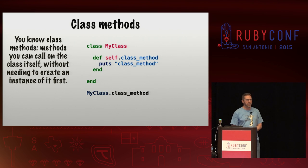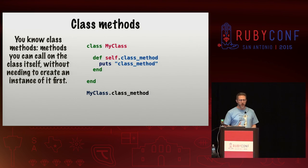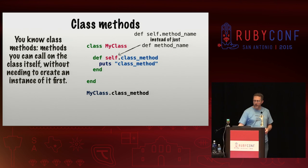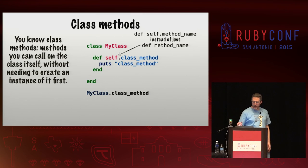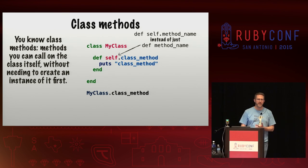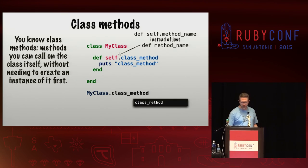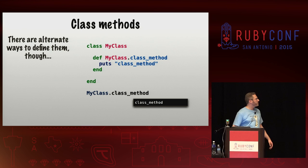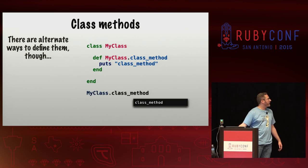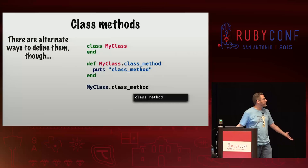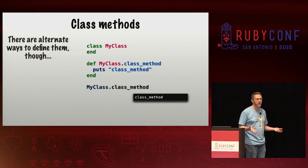Let's take a look at class methods. You know class methods — they're methods you can call on the class itself without needing to create an instance of it first. We define a class method on my class by saying def self and the name of the method we want to define, instead of just def and the method name. Then we can invoke that without creating an instance. There are alternate ways to define class methods: you can use the class constant instead of self within the class body, or define a class method outside of the class altogether using the class constant.